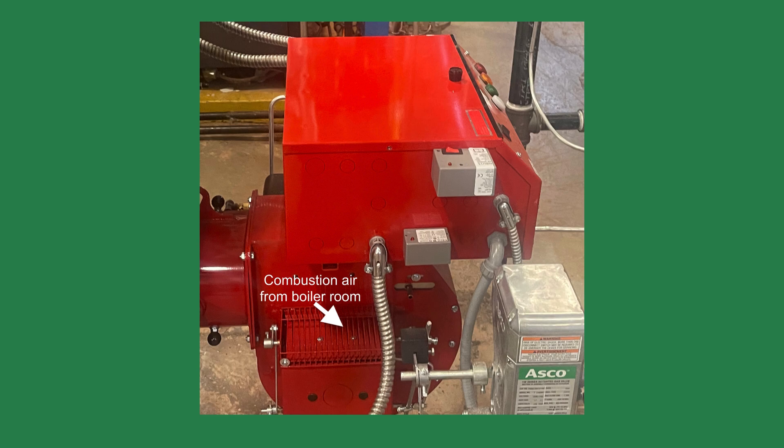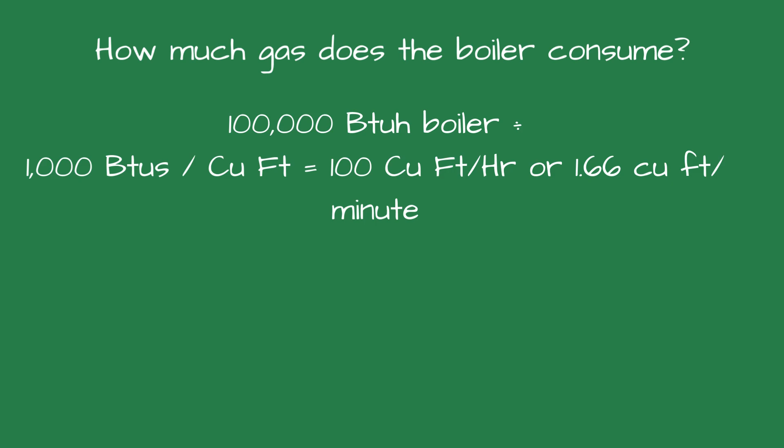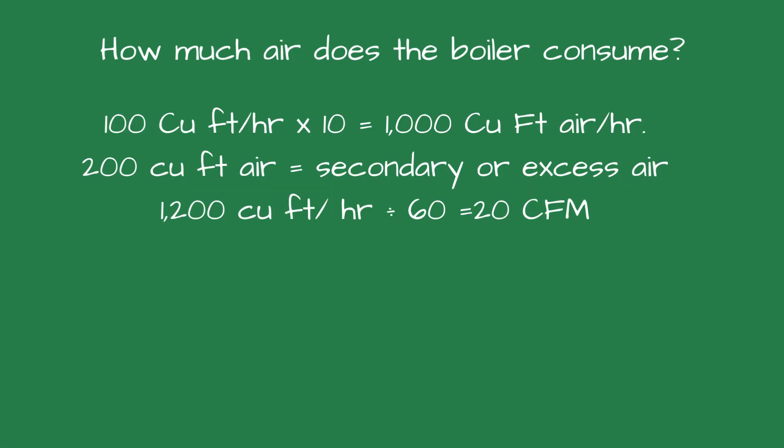Power burners include both primary and secondary air inside. To see how this works, consider the following scenario: a building has an 85% efficient boiler with an input of 100,000 BTU-H — BTUs per hour. Based on 1,000 BTUs per cubic foot of gas, we will need 100 cubic feet of natural gas per hour. Take 100 cubic feet divided by 60 and you'll have 1.66 cubic feet per minute. Take 1,000 cubic feet of air as the minimum required, add 200 cubic feet of air — that's 20% excess air — for a total of 1,200 cubic feet of air per hour, which equals 20 CFM.